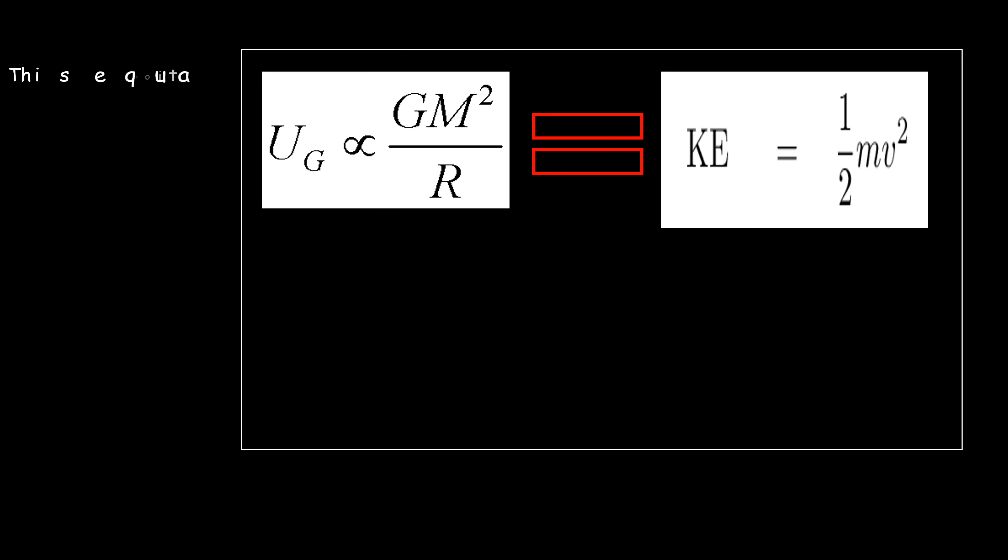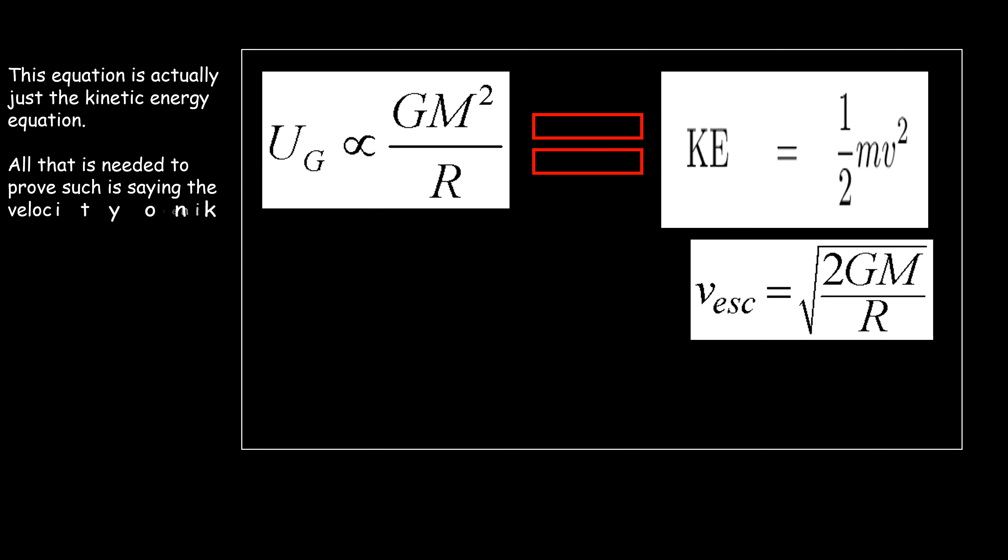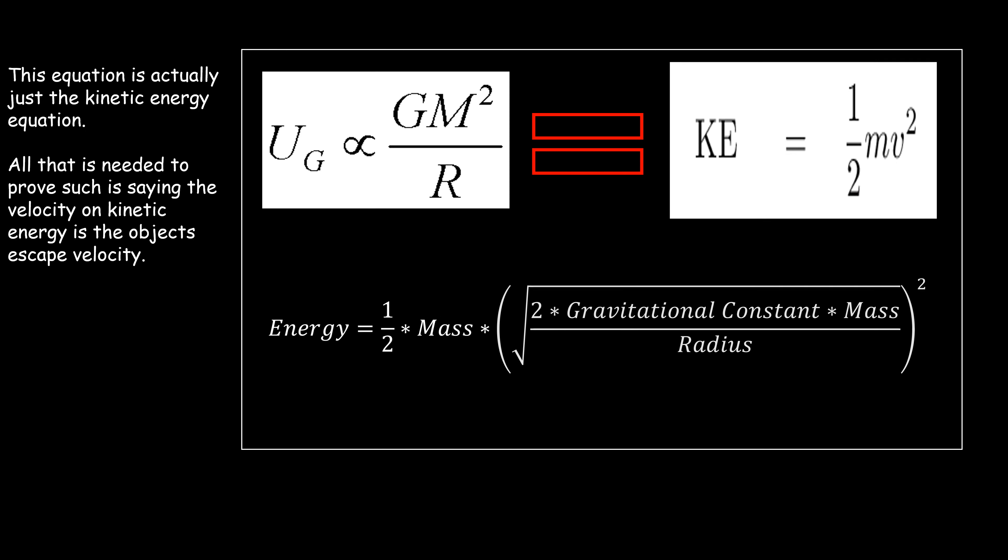Now we can actually prove that the gravitational binding energy is just a form of kinetic energy. To do this proof, we actually just need to use the escape velocity. We say that the velocity in kinetic energy is the escape velocity of the planet. So we start off with the equation for our kinetic energy and replace the velocity with the escape velocity of the planet.